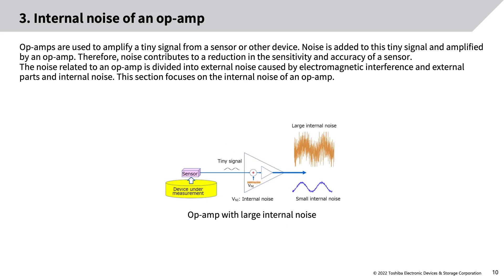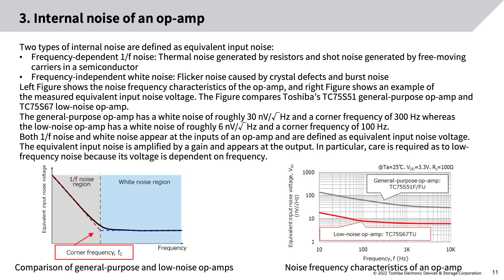Section 3: Internal noise of an op-amp. Op-amps are used to amplify tiny signals from sensors or other devices; noise is added to this tiny signal and amplified, reducing sensitivity and accuracy. Op-amp noise is divided into external noise caused by electromagnetic interference and internal noise. Two types of internal noise are defined as equivalent input noise: frequency-dependent 1/f noise (thermal noise from resistors and shot noise from free-moving carriers), and frequency-independent white noise (flicker noise from crystal defects and burst noise).